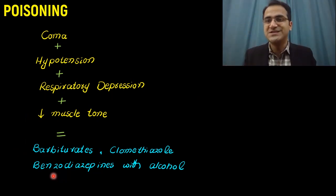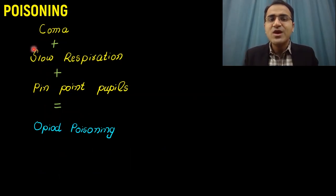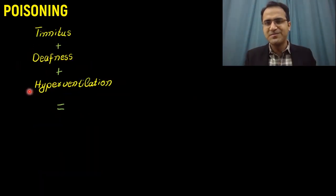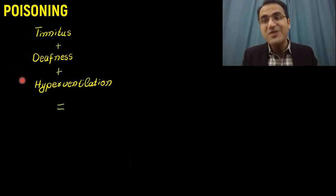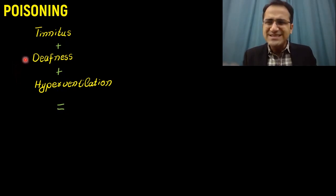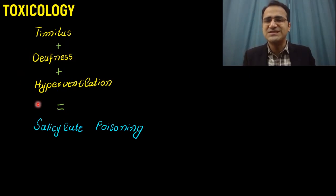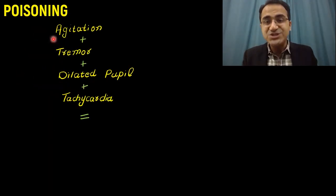If you see coma with slow respiration and pinpoint pupils, this is the classical triad for opiate poisoning. If you see tinnitus with deafness and hyperventilation in the patient, these are classical features of aspirin poisoning — salicylate poisoning.